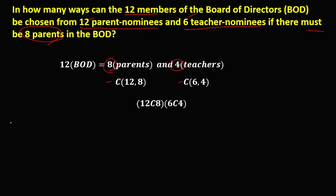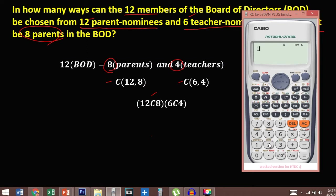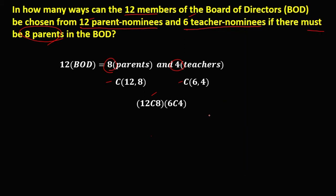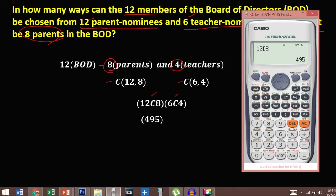To solve for 12 choose 8: using NCR, 12 choose 8 equals 495. Then for 6 choose 4: using NCR, 6 choose 4 equals 15.